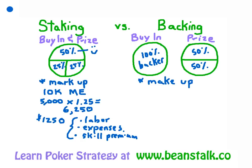Let's move on now to make-up, the special complication in a backing arrangement. It refers to the debt that the horse accumulates as he plays more and more tournaments without showing a profit. It's not money that you owe the backer out of your bank account — you only have to pay it out of future winnings in tournaments that you're backed by that backer. So let's say you played three tournaments over a three-week period and you lose your buy-in in all three: minus $10K in the first, minus $3K, minus $2K. Over those three weeks, you're down $15K — we say you're $15,000 in makeup.